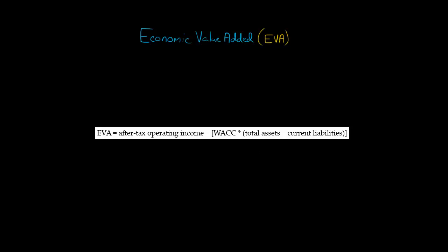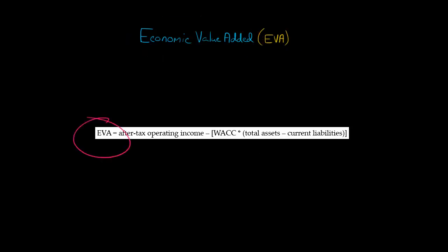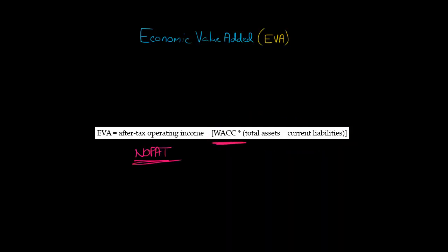In this video, I'm going to work a sample problem to show you how to calculate EVA, which stands for Economic Value Added. EVA is equal to after-tax operating income, which is sometimes called NOPAT — Net Operating Profit After Taxes — minus the weighted average cost of capital times total assets minus current liabilities.